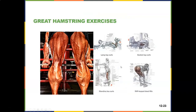Deadlifts are great. Seated leg curls are fine for the hamstrings, but seated leg extensions put too much torque on the knee — work the quads with leg press, squats, or lunges instead. For lying leg curls, make sure your butt doesn't come up or your back arch — if it does, you're using too much weight. Standing leg curls are a great way to isolate the hamstrings — if your back arches or your butt sticks out, drop the weight.